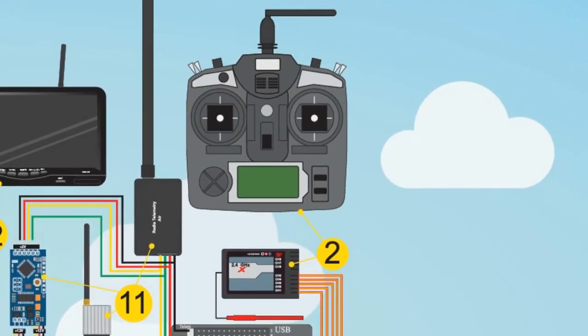The radio transmitter is used to control the motors of the drone. We need to bind the transmitter with the receiver of the drone. In advanced drones we can use other systems to control.